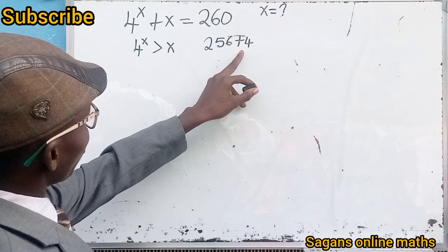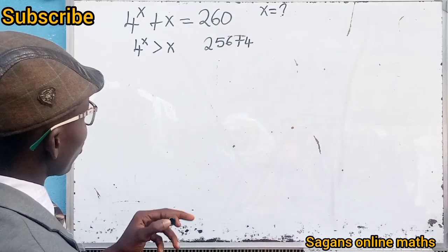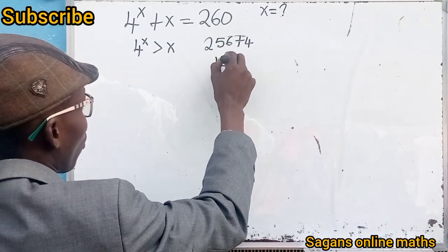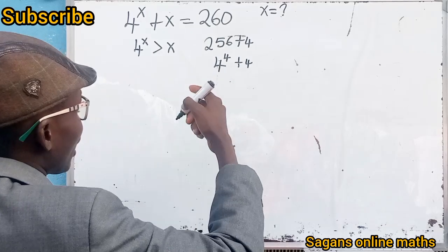We can also put 256 in index form: 4 raised to the power of 4 plus 4. 4 to the 4th power simply means 4 times 4 times 4 times 4, which is 256. And 4 raised to the power of 4 is greater than 4.